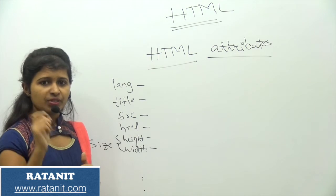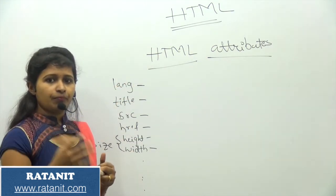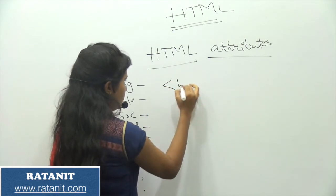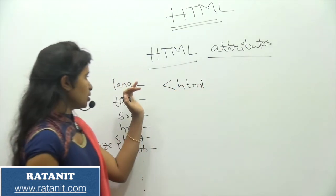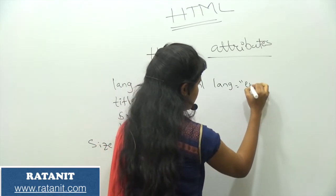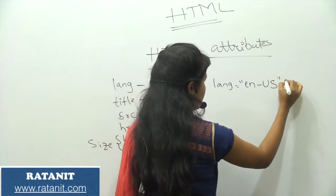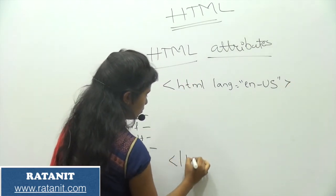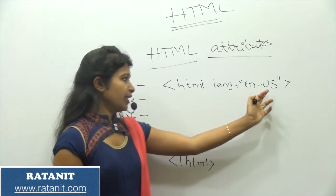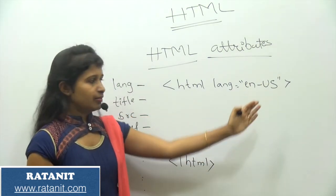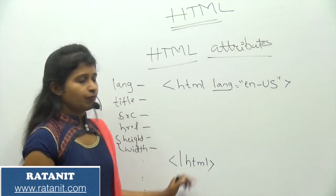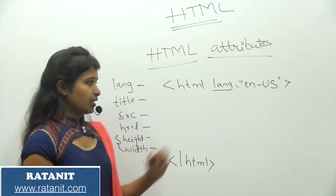Coming to the language attribute — from HTML5 up to the updated version, we have a specific language declaration. In my HTML tag, I am using the language attribute: lang equals 'en-us'. Here 'en' means English and 'us' means United States. This is the default — even if you don't specify it, it will run. But the language attribute specifies in which language our document is written, and that is its main purpose.